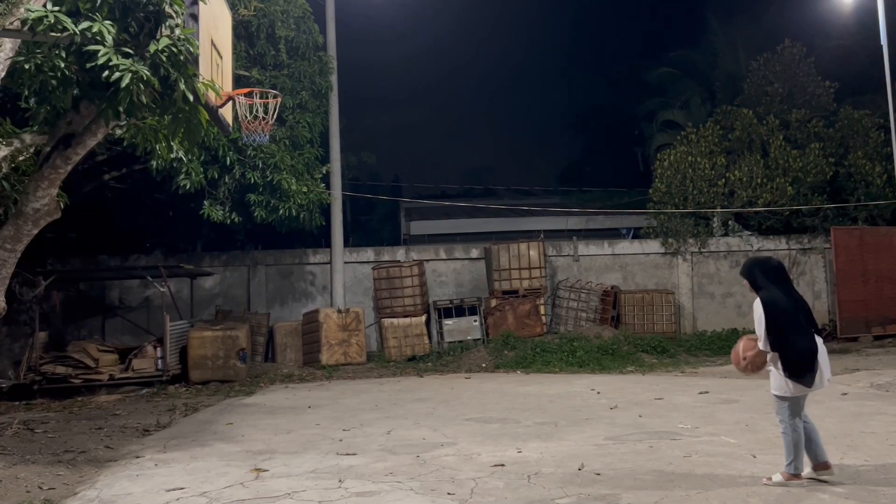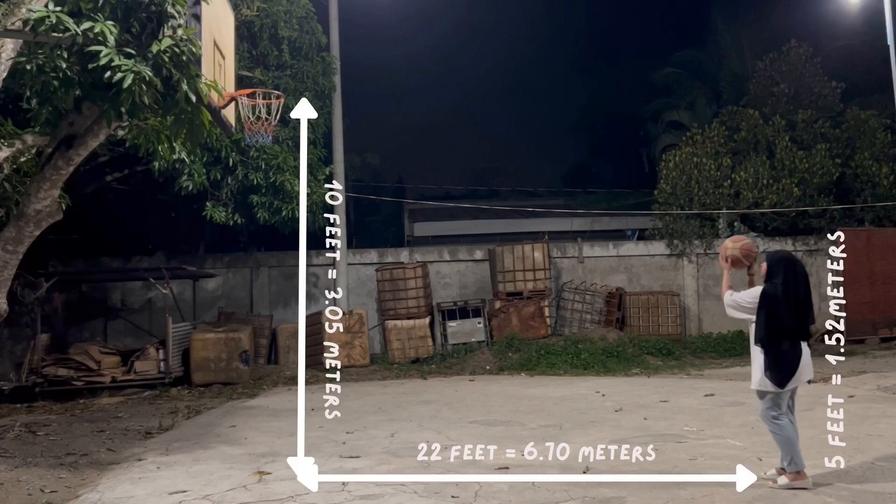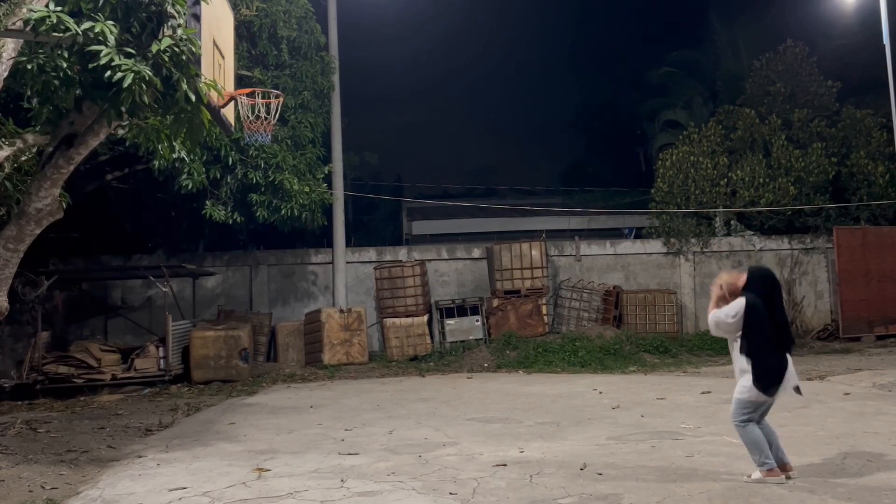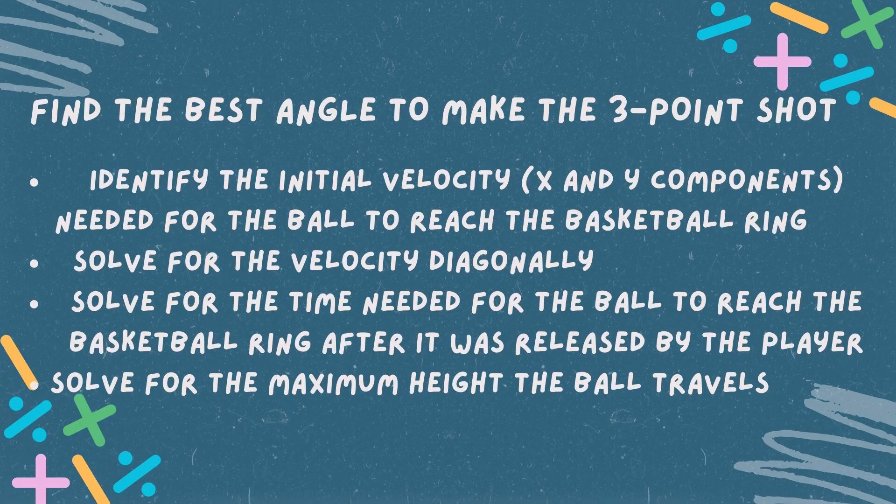We know that the standard distance of the ring from the court is 10 feet high, while the distance of the player from the ring is 22 feet. So to find the best angle to make a three-point shot, we have to first identify the initial velocity of the x and y components needed for the ball to touch the ring. Then we have to solve for the velocity diagonally, then solve for the time needed for the ball to reach the ring after the ball is released by the player. And lastly, we have to solve for the maximum height that the ball traveled.